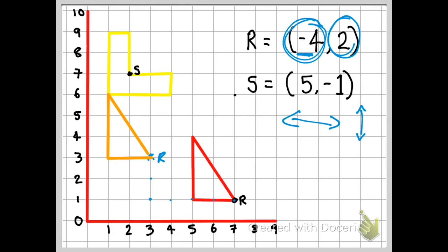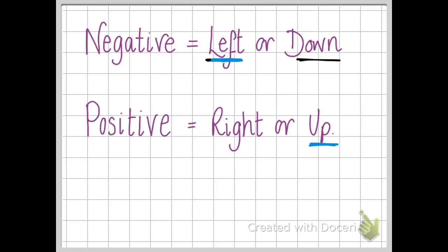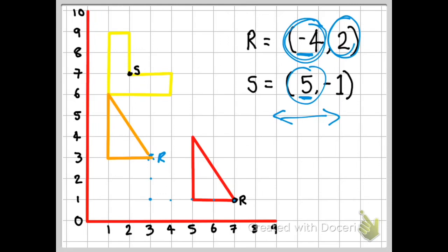Let's take a look now at the last example, which is the S vertex. So it asks us here, the first number decides again if we go left or right, and it's a positive number. So if it's a positive number, I'm going to be going right by five.